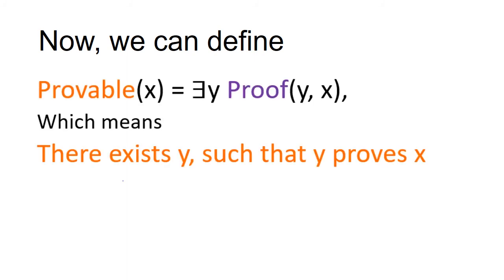Now we can define provability of the logical formulas in the terms of natural numbers as a formula x is provable if there exists a logical formula y such that y proves x. So provable of x can be defined as there exists y such that proof of y of x.